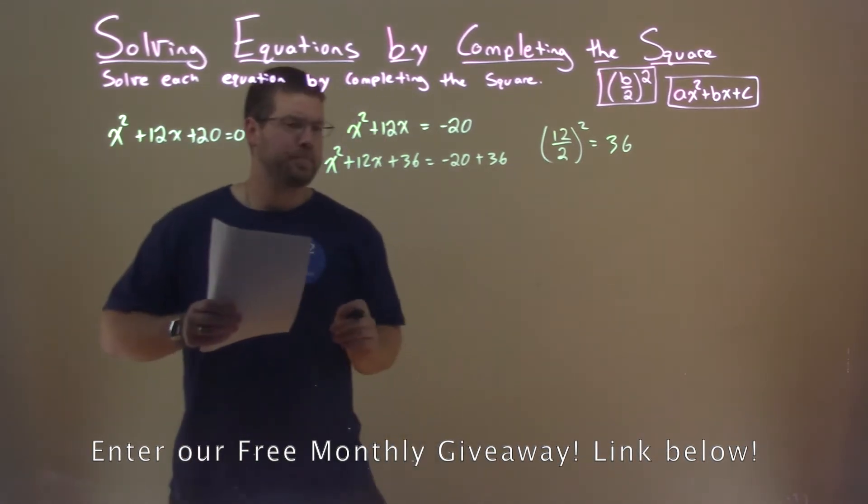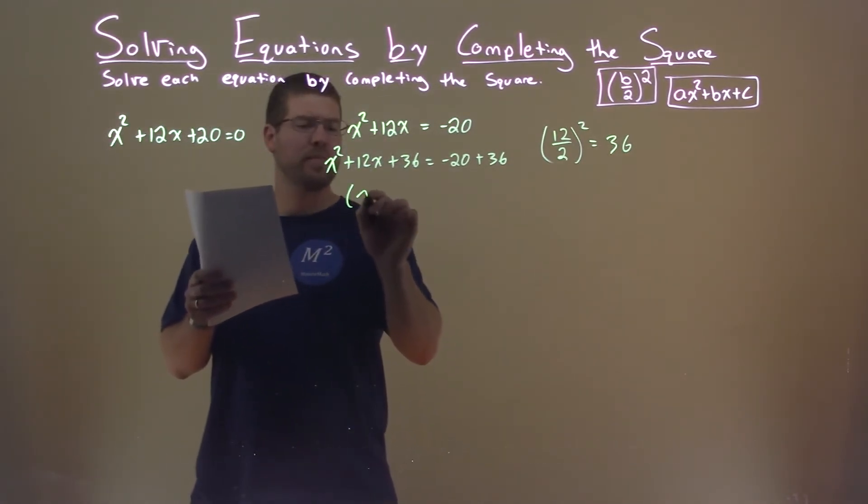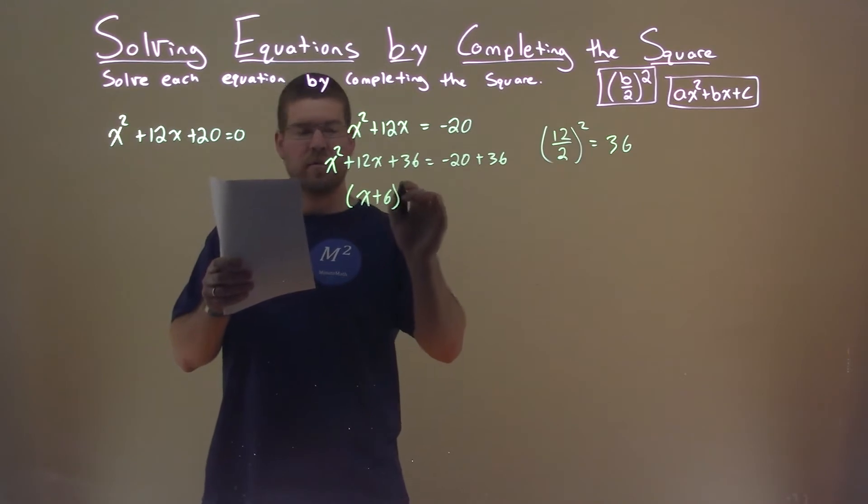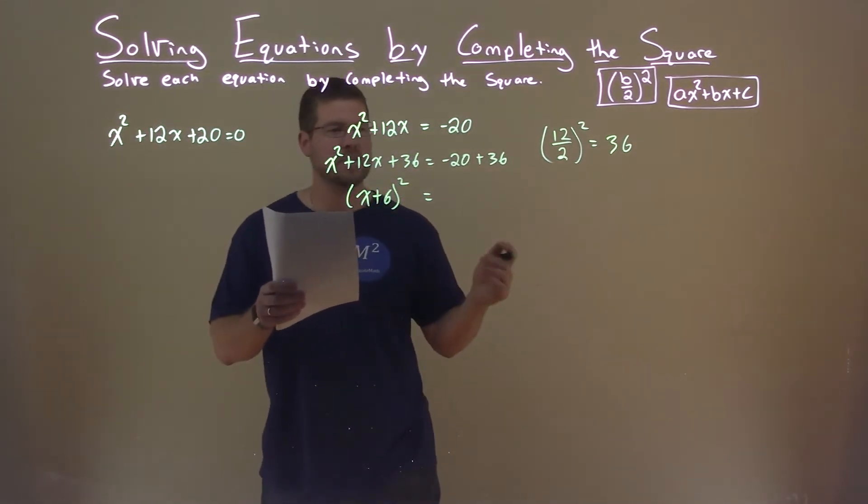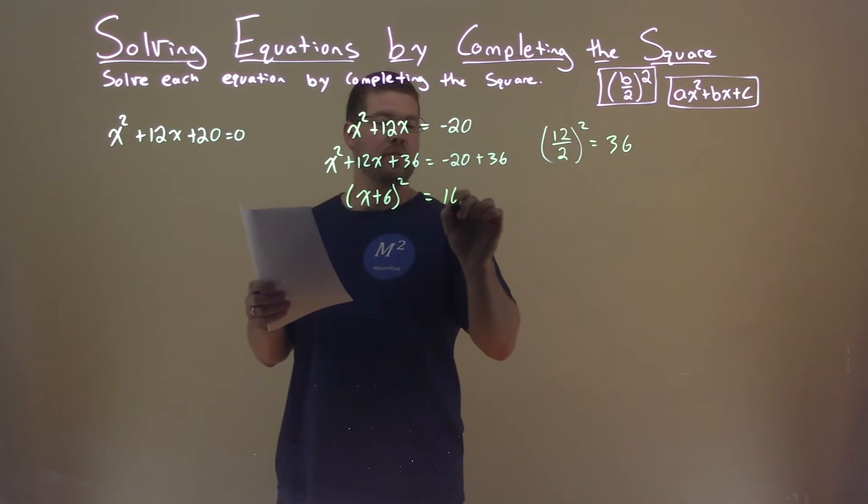All right, left-hand side. Well, that's now a perfect square: x plus 6 squared equals negative 20 plus 36, which is positive 16.